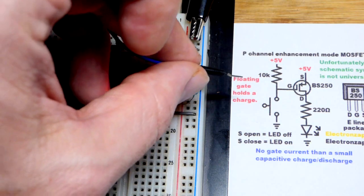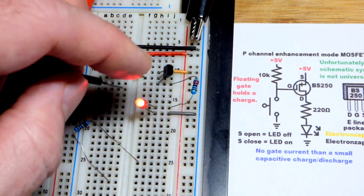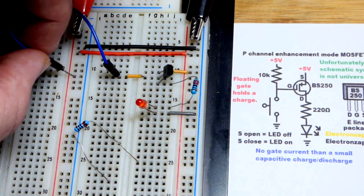You can see that it locks into place. That's why I put that little note there, that floating gate holds a charge. Right now it's holding a charge, whatever I last put it into.